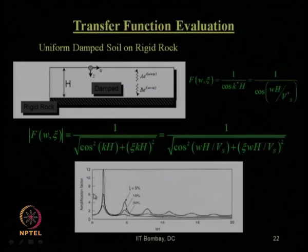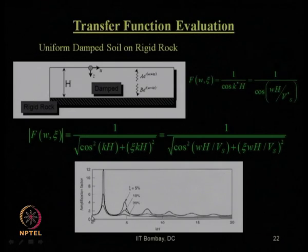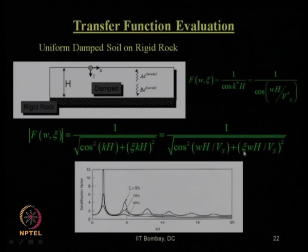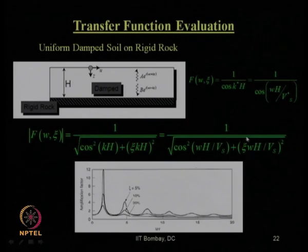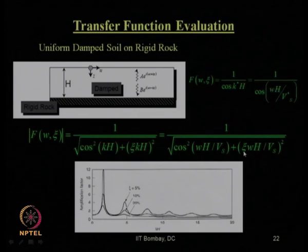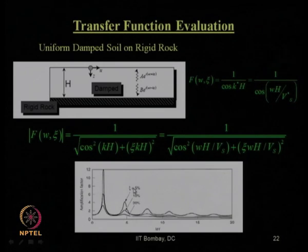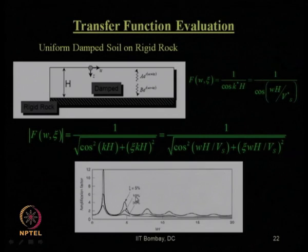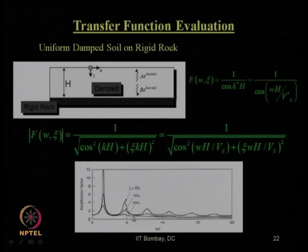For different values of damping ratio η, the transfer function peaks at different values of KH, but it never goes to infinity for any positive value of η — it only goes to infinity when η = 0 (no damping). As damping ratio increases from 5% to 10% to 20%, there is a significant decrease in the peak amplification factor values at different KH values.